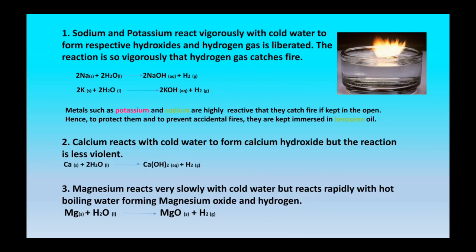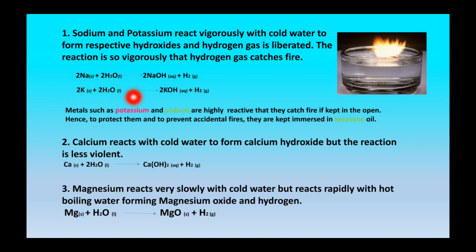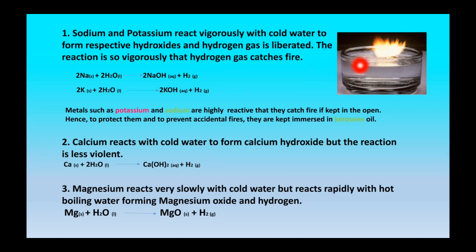Sodium and potassium react with cold water to form their respective hydroxides and hydrogen gas. This reaction is so violent that it produces hydrogen gas which catches fire. Sodium reacts with water to produce sodium hydroxide and hydrogen gas; potassium reacts with water to produce potassium hydroxide and hydrogen gas. These reactions are exothermic and liberate a large amount of heat, which is enough for hydrogen gas to catch fire.